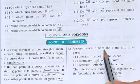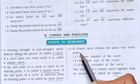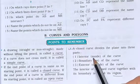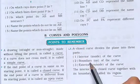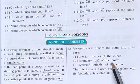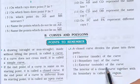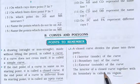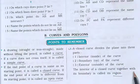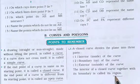A closed curve divides the plane into three parts: the interior, which is the inside of the curve; the boundary, which is on the curve; and the exterior, which is the outside of the curve. The interior of a closed curve together with its boundary is called a region.